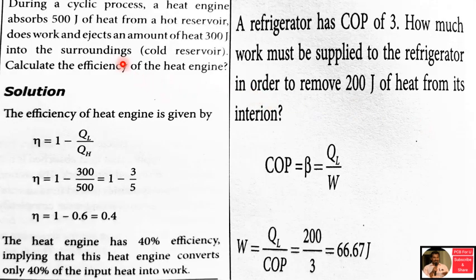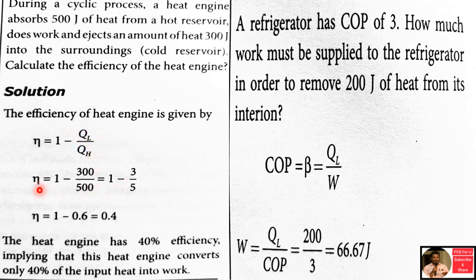During a cyclic process, a heat engine absorbs 500 joule of heat from a hot reservoir, does work, and ejects 300 joule of heat into the cold reservoir surroundings. The efficiency of a heat engine formula is 1 minus QL by QH. So efficiency equals 1 minus 300 by 500, which equals 1 minus 3 by 5.